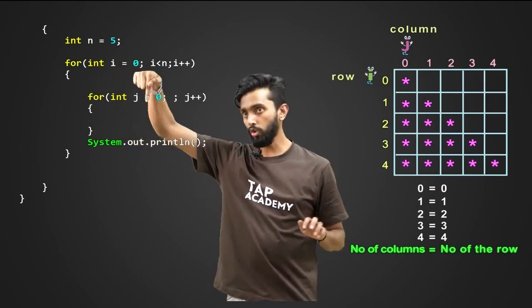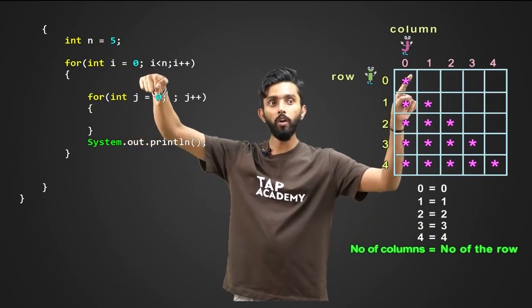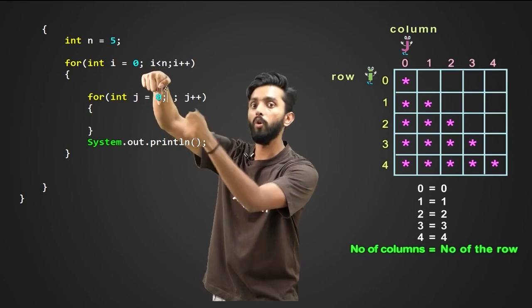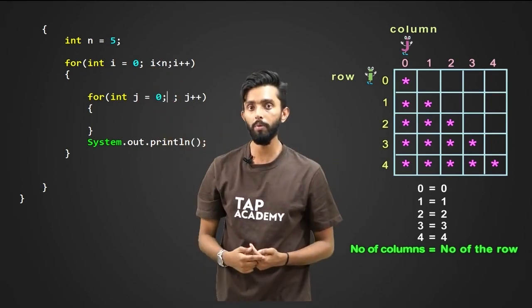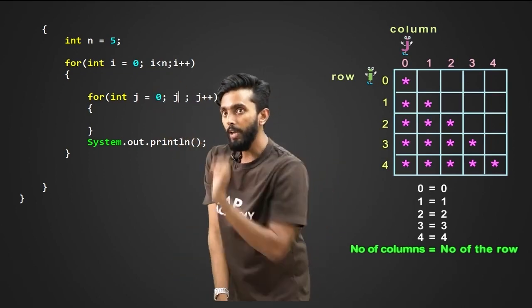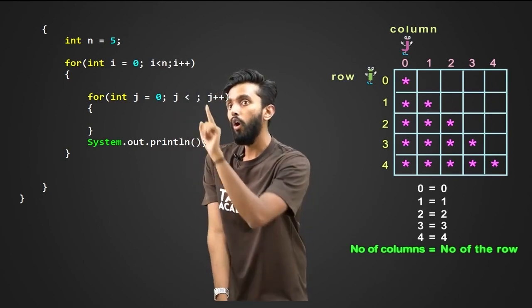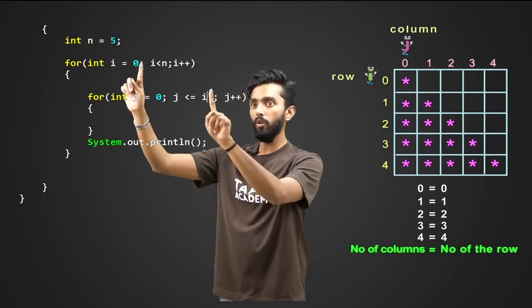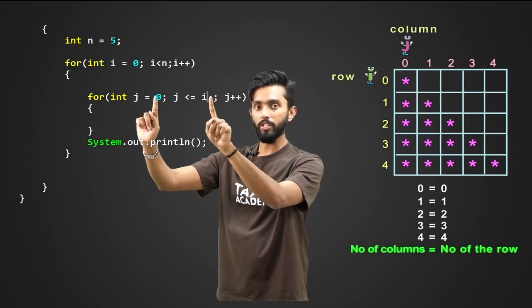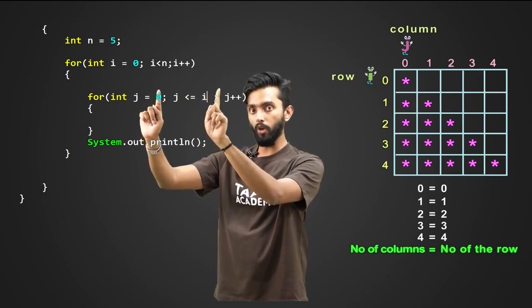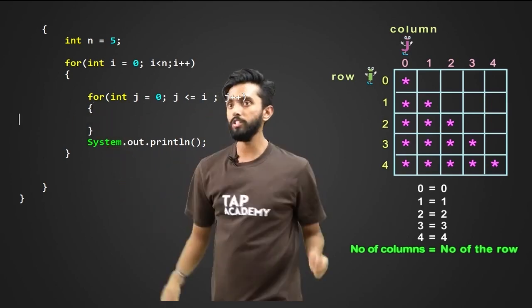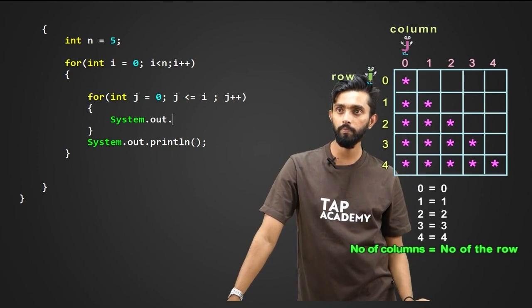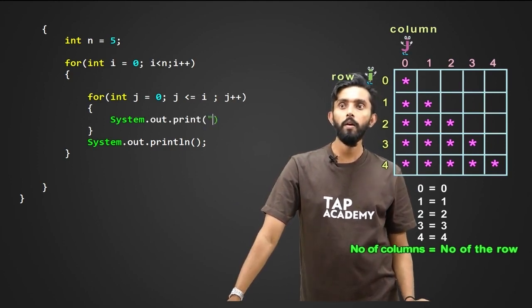i equal to zero. For the zeroth row, I will enter. For the zeroth row, how many columns should be there? One column. Which means this j value should go from zero till zero. Zero till zero means one column. See, j is less than or equal to i. i is my row. So if i is zero, this is zero. First time, j is equal to zero. Is zero less than or equal to zero? True. Enter. After entering, I will print one star. By telling system.out.print, I will print one star. One star will get printed. Next.